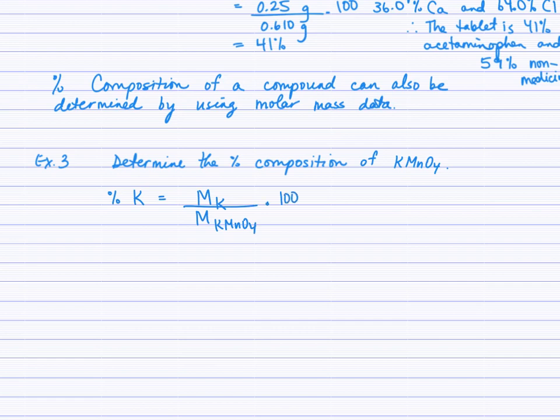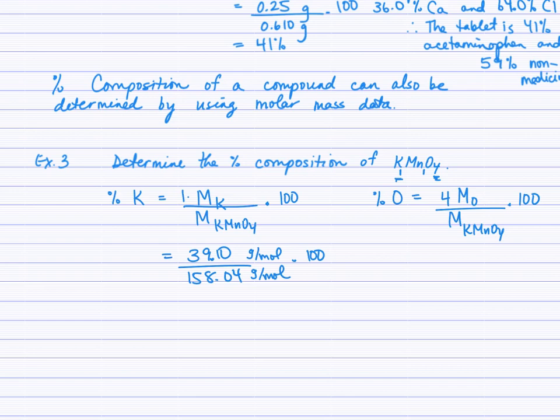When we want to determine the percent of potassium, it'll be the molar mass of potassium - there's only one potassium in the formula - over the molar mass of KMnO4, times 100. We need to do that for the manganese. For oxygen, the percent would be 4 times the molar mass of oxygen over the molar mass of KMnO4, times 100. Be careful that you use the subscript and incorporate that into your numerator. If we plug in 39.10 and calculate the molar mass of KMnO4, we should come up with 158.04.